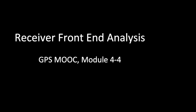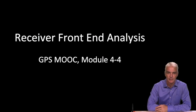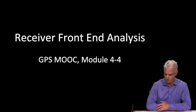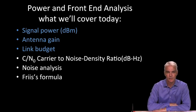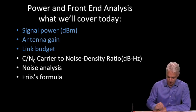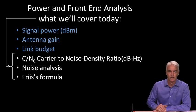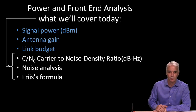Hello, and welcome to module 4-4. We're going to do receiver front-end analysis in this module, which is essentially a noise analysis. In the last module, we looked at signal power, antenna gain, and the link budget. Today, we're going to look at what the carrier-to-noise density ratio is, then do the noise analysis, which involves something called Friis's formula. That's what you'll learn in this module.